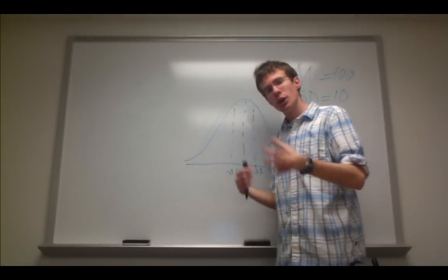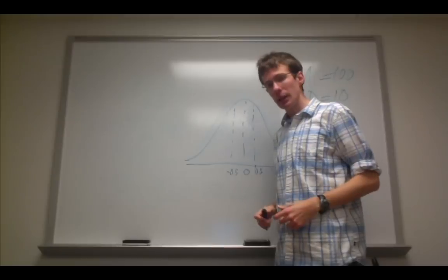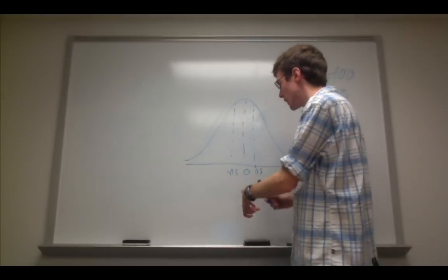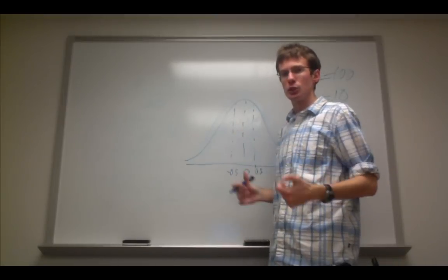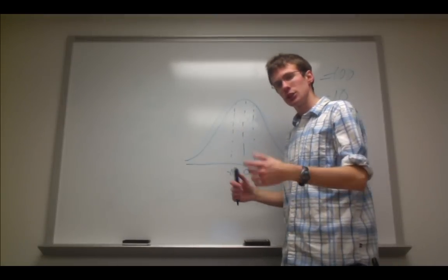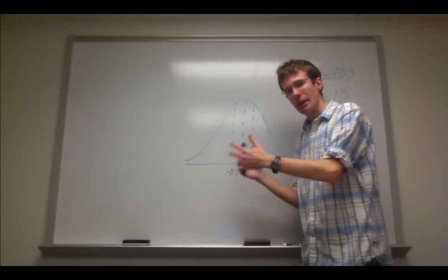And then I simply convert these back to raw scores, and then I find out what raw scores are associated with the lower and upper bounds of the middle 38% of the distribution. In this case, it's a pretty easy conversion. It's IQs of 95 and 105.